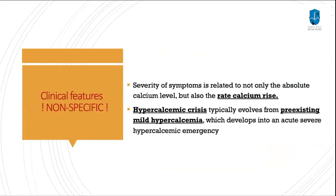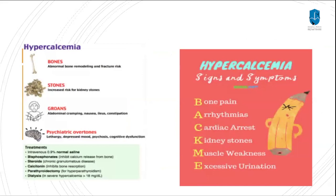The severity of symptoms is related not only to the absolute calcium level, but also the rate of calcium rise. Hypercalcemic crisis typically involves preexisting mild hypercalcemia which develops into an acute severe hypercalcemic emergency. A useful mnemonic to remember the features of hypercalcemia is: bones, stones, groans, and psychotic overtones. Another mnemonic uses the word 'BAKE': bone pain, arrhythmia/cardiac arrest, kidney stones, muscle weakness, and excessive urination.